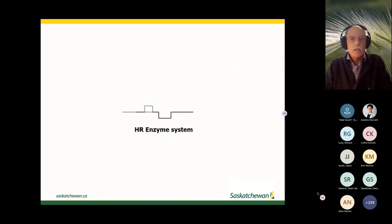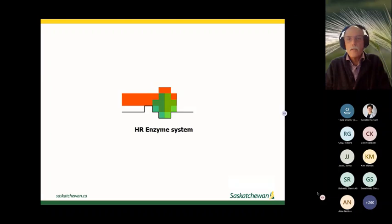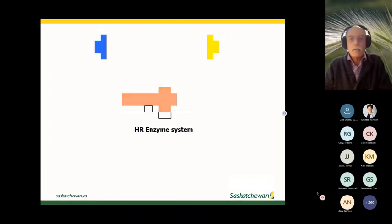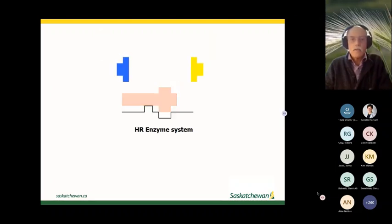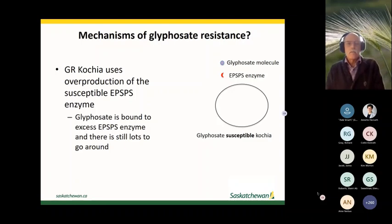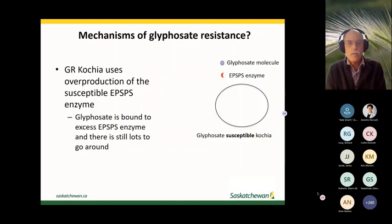At a resistance site, there's a slight modification so the herbicide can no longer fit into the site and the reaction takes place normally. This continues until the herbicide begins to break down and disappear from that site, and the plant survives and reproduces quite nicely.